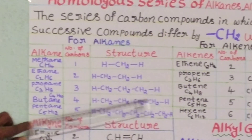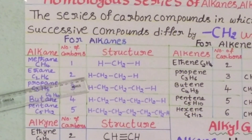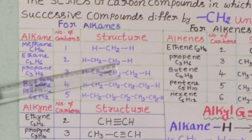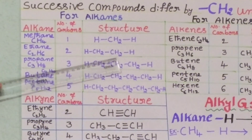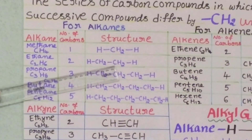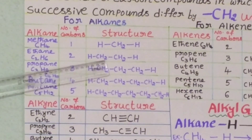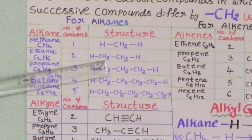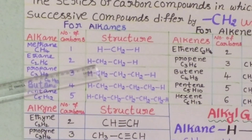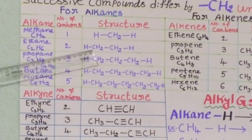When we observe the first two structures — methane and ethane — there is an increase of one CH2 unit. Observe closely: the difference between these two structures is also one CH2 group. So methane and ethane are an example of the homologous series of alkanes.